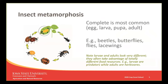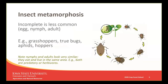Big groups with complete metamorphosis include beetles, butterflies, flies, and lacewings — some of which are field crop pests. The second most common type is incomplete metamorphosis, with three life stages: egg, nymph, and adult. Using a stink bug as an example, nymphs look like small adults with developing wing pads. Big groups with incomplete metamorphosis include grasshoppers, true bugs, aphids, and hoppers.